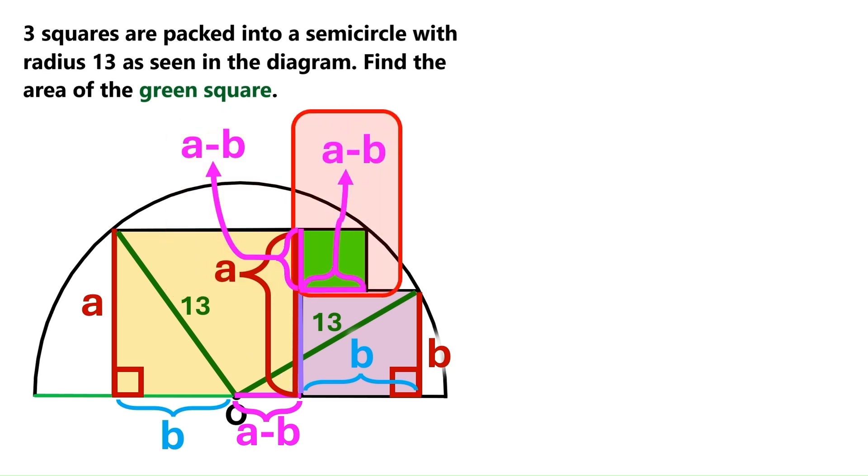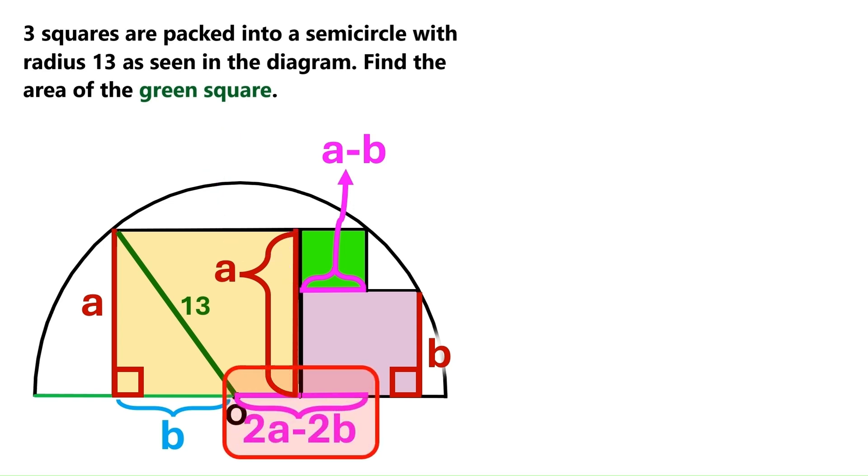This is the other side of the green square. So this is a minus b too. Now let's take this side and project it down here. And this is also a minus b. We can add these two and get 2a minus 2b.